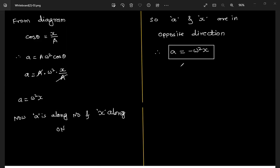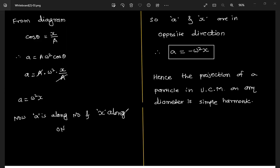Hence the projection of a particle performing uniform circular motion on any diameter is simple harmonic. Just go through it once and revise well.